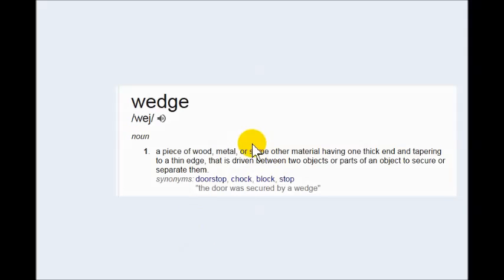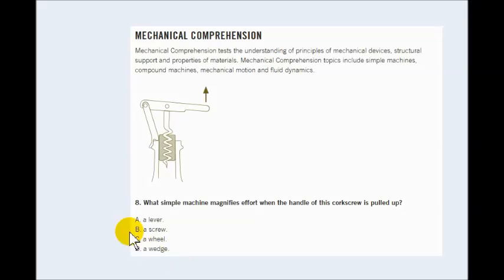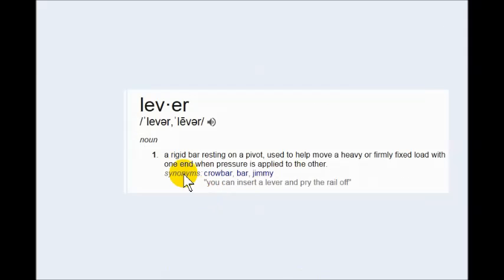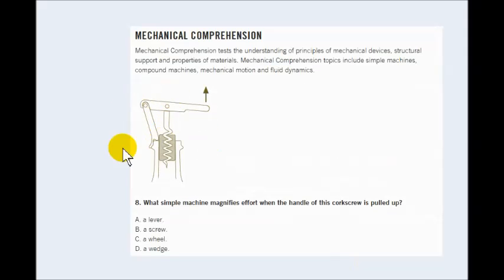And a wedge, finally: a piece of wood or metal or some other material having one thick end and one tapering to a thin edge that is driven between two objects or parts of an object to secure or separate them. So I don't think that anything is securing or separating. So I think it's safe to say that we could go with the lever because we have a rigid bar resting on a pivot used to help move firmly or fixed load with one end when pressure is applied to the other. It's like a crowbar, a bar, or jimmy. So I would pretty much go with this.